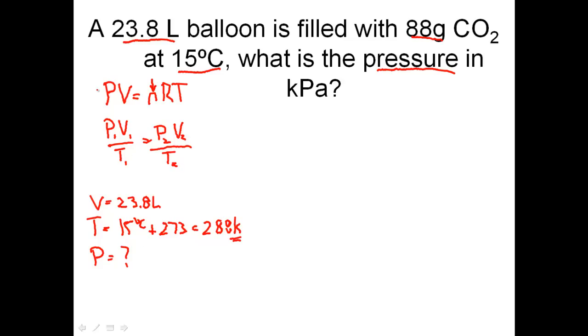We have PV equals NRT where only one pressure, one temperature, and one volume has been given. You can't use the combined gas law formula because it requires at least two of one of these variables. So this formula really cannot be used. Not to mention it cannot handle the fact that we have 88 grams of CO2.